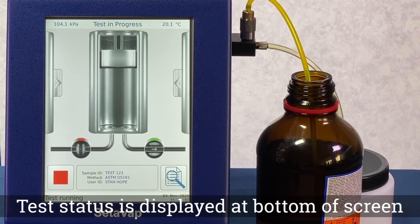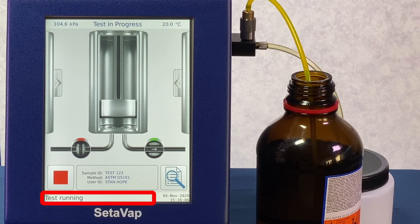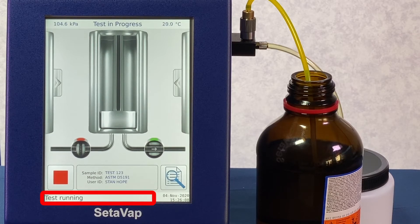During a test cycle, the status is displayed at the bottom of the screen. For the purpose of this video, the test footage has been sped up.